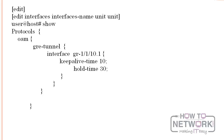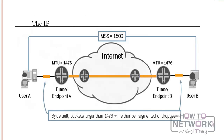The IP protocol was designed to be used over a variety of interface types. Although the maximum length of an IP packet is 64 kilobytes, most interface types enforce a significantly smaller maximum packet size, known as a maximum transmission unit, or MTU. The MTU used depends on the interface type. The IP protocol accommodates different MTU values by allowing routers to fragment IP packets as necessary.